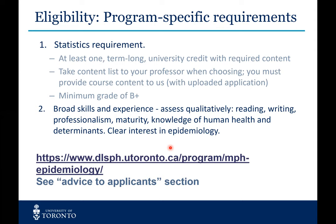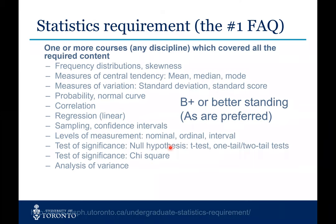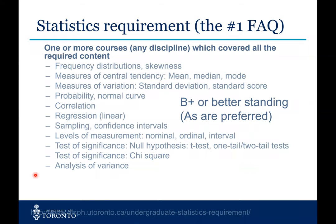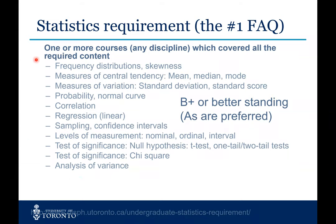One of the program-specific requirements is a statistics course that must be at least one term long at the university level, and you need a minimum grade of B+ in this course. It needs to address, at a minimum, these topics listed on the Dalla Lana website. It is your responsibility to show very clearly to the admissions committee that your course or courses — sometimes this is achieved over multiple courses — covers all of this material. You will need to include the course names and attach the syllabus from that course to show us that this content was covered.